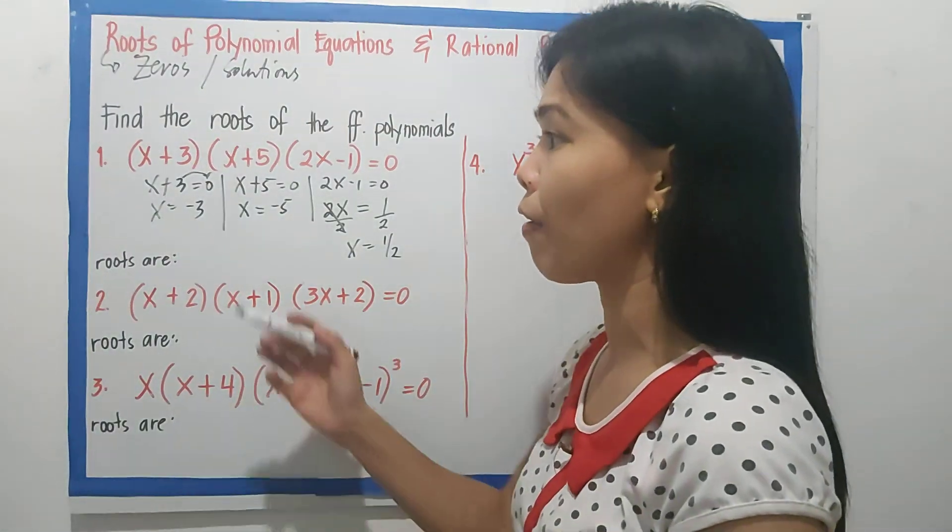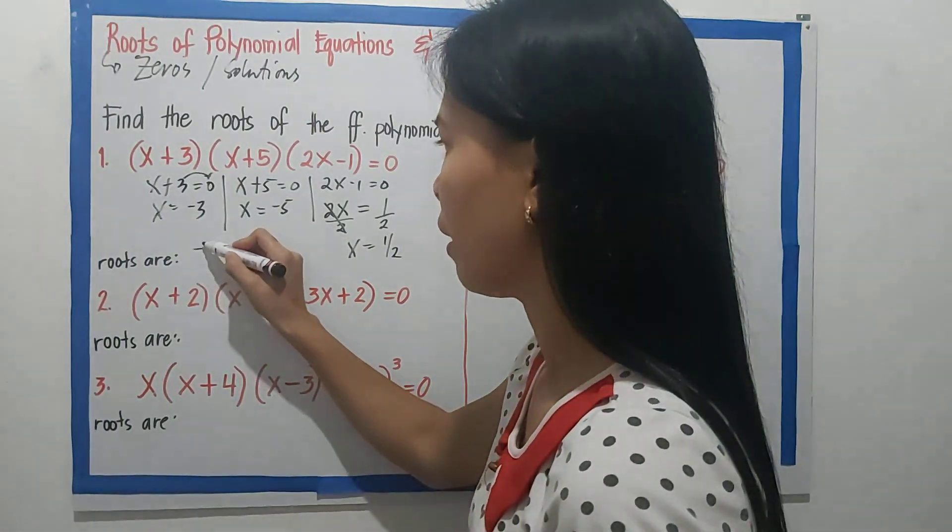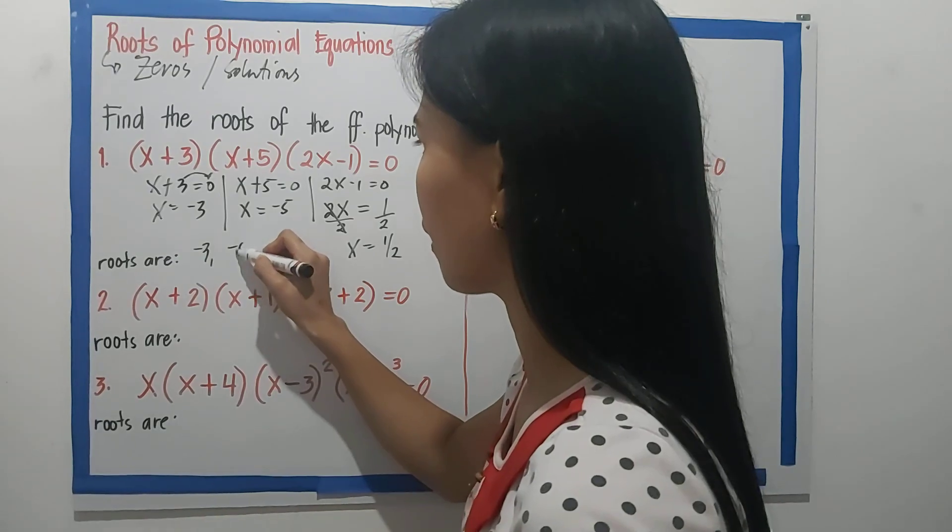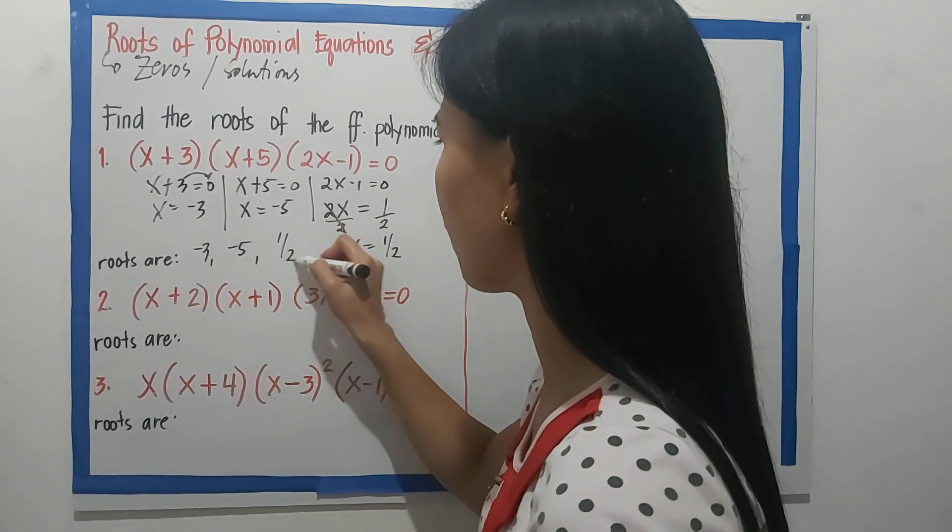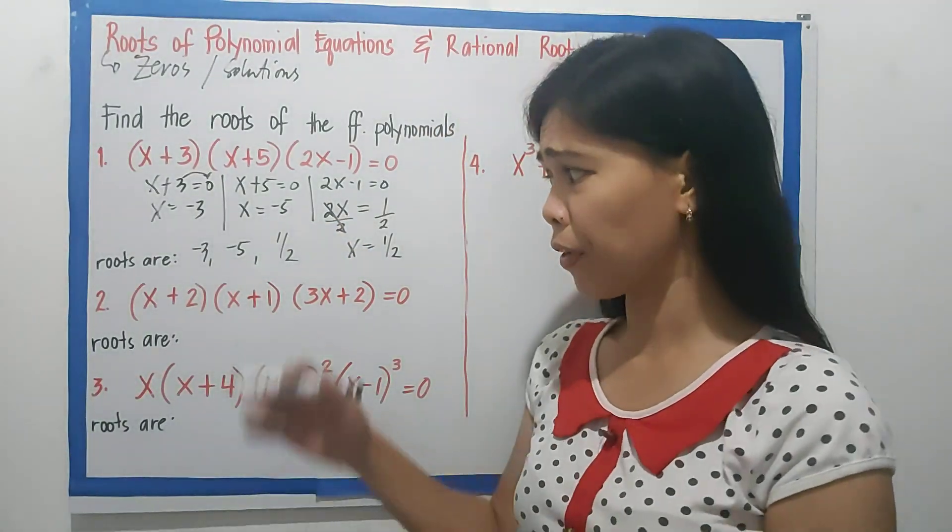So the roots are the values of x. So these are -3, -5, and positive 1/2.